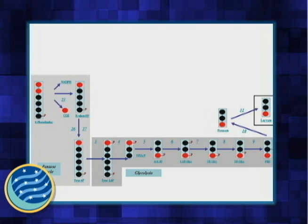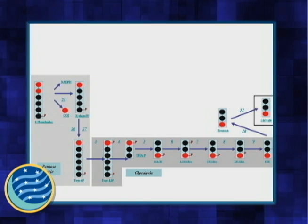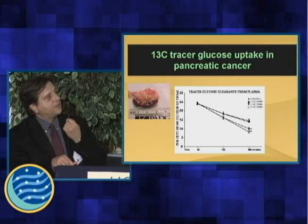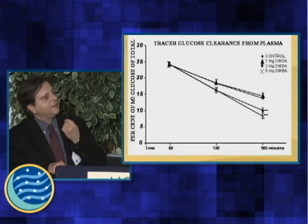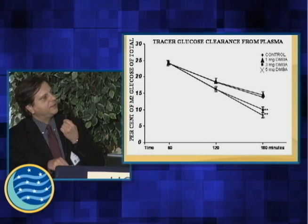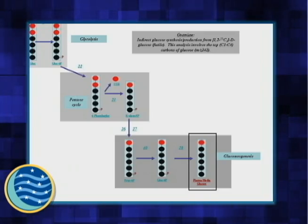Looking at glucose alongside this lactate labeling pattern, we see that the same pancreatic tumor actually changes the animal's glucose uptake rate. The 5 mg and 3 mg carcinogen-treated animals, which have medium and larger pancreatic tumors, soak up the tracer glucose injected into these animals. So there is a difference in glucose uptake as well as lactate production from the tracer glucose taken up by host tissues.